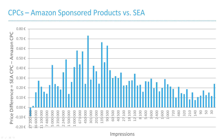Now let's jump into the data. This first chart compares SEA CPCs to Amazon CPCs. SEA stands for Search Engine Advertisement. We have calculated a keyword set and collected SEA and Amazon CPC data. The bar chart displays the price difference between the SEA and the Amazon CPC, so there is a positive number whenever the SEA CPC is larger than the Amazon CPC. The horizontal axis displays the number of impressions in decreasing order, so the fat head with a lot of impressions is on the left. Our first finding is: for this keyword set, the SEA CPCs are on average 23 cents higher.